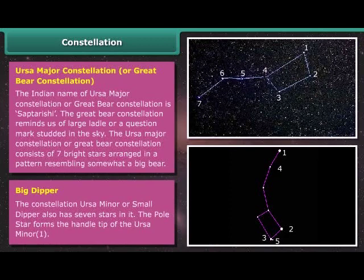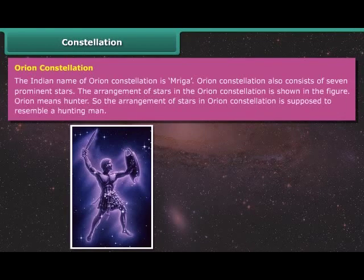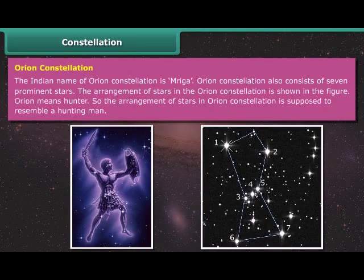The constellation Ursa Minor or Small Dipper also has seven stars in it. The pole star forms the handle tip of the Ursa Minor. Orion Constellation: The Indian name of Orion Constellation is Mriga. Orion Constellation also consists of seven prominent stars. Orion means hunter. So the arrangement of stars in Orion Constellation is supposed to resemble a hunting man.